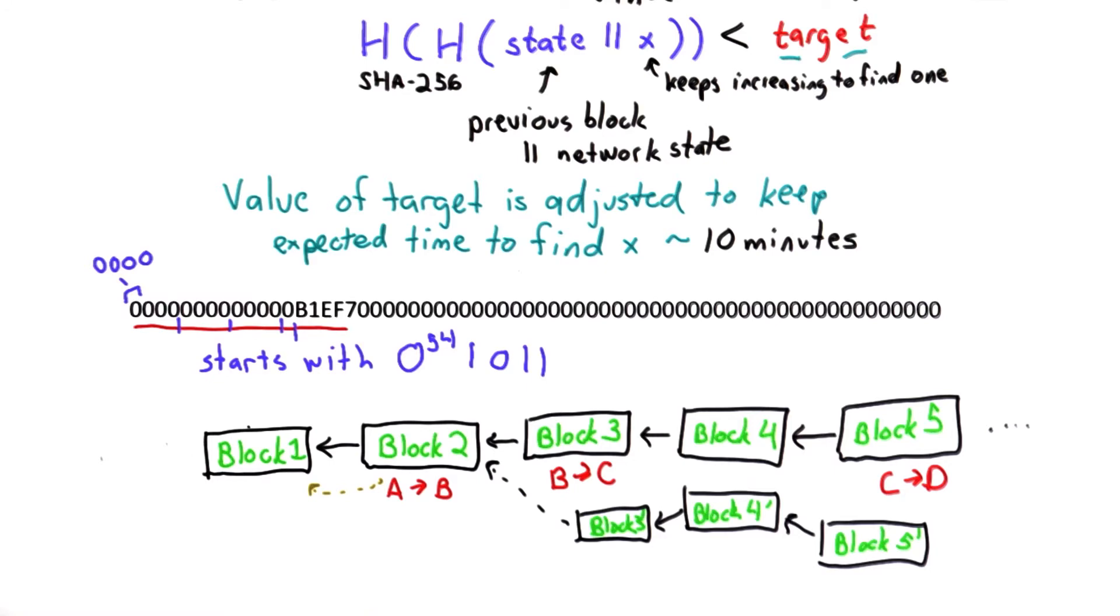Each peer in the network might see a different view of this chain of blocks. If they see different views, the one that has the longest chain is the one that will be viewed as the most correct view of all the transactions. So every participant in the network is effectively keeping track of all transactions, and the version that people trust the most is the one with the longest chain.